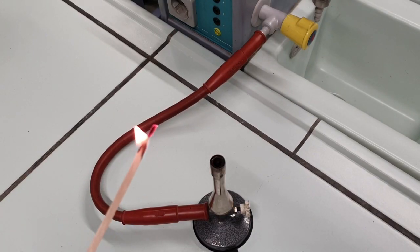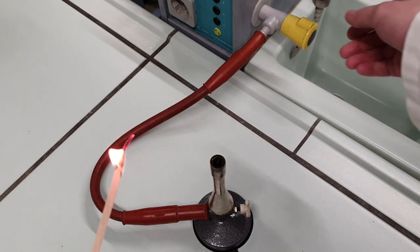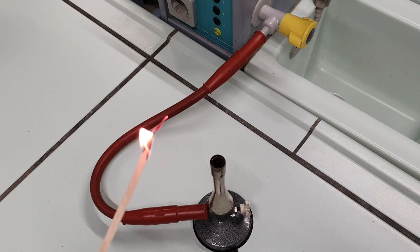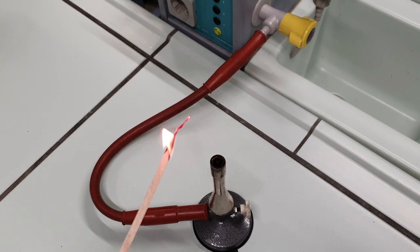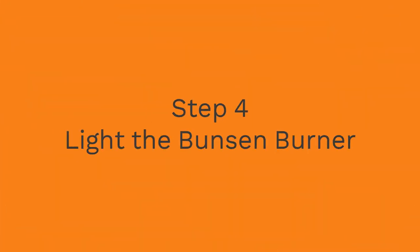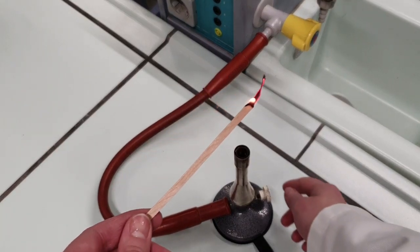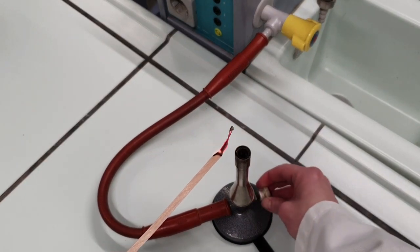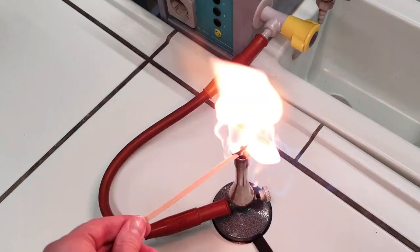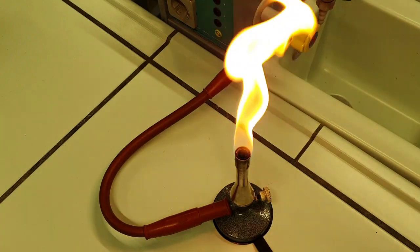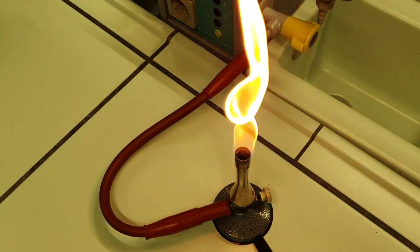Step 3. Take a lighted splint and turn on the gas tap. Now if your Bunsen burner doesn't have a valve, it will light at this point. Step 4. Once the gas is flowing through, light your Bunsen and there you go. You are now on a safety flame.